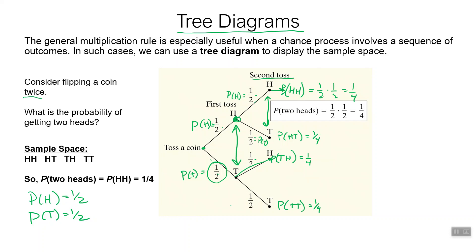We can then ask: what's the probability that we get exactly one tail? Well, heads-tails has one tail and tails-heads has one tail. So we add those two together: one fourth plus one fourth equals one half. We can do interesting things once we have these outcomes. We'll come back to tree diagrams more later.